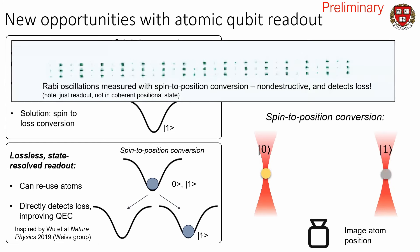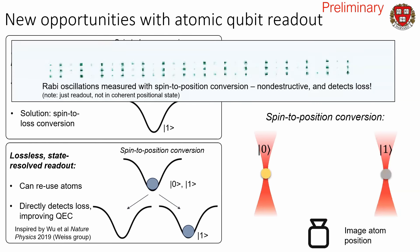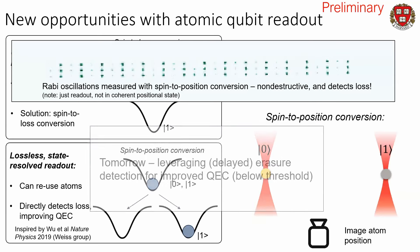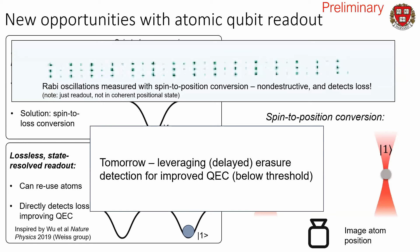We're now measuring Rabi oscillations not by destroying our atoms, but by doing spin-to-position conversion. This is not a coherent positional superposition — it's just a method of doing readout. Importantly, this is non-destructive and also gives us the ability to detect loss, which is extremely useful for doing error correction because it tells us about where a lot of our errors are. I'll tell you at the IQIM seminar tomorrow how we're using that to improve our error correction. This new readout technique is also inspired by beautiful ideas about erasure from Jeff Thompson and Shruti Puri, and experiments from the superconducting qubit community and Manuel's group.